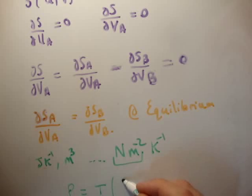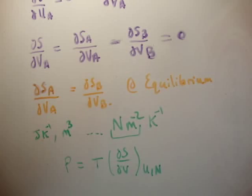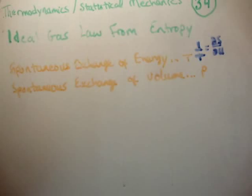That makes us suggest the following equation: pressure is T times del S del V, holding U and N fixed. Now we have an expression for pressure, or an expression for pressure because of mechanical equilibrium, wherein the volume is no longer being exchanged. So let's see if we can verify that this equation actually works, and hopefully come up with a formula for the ideal gas law.